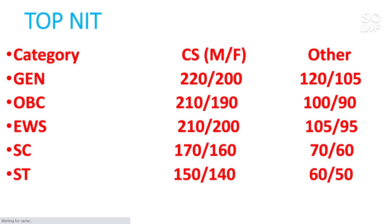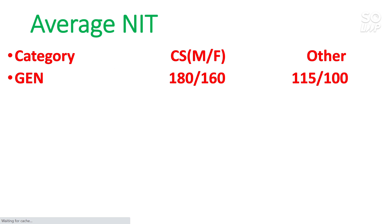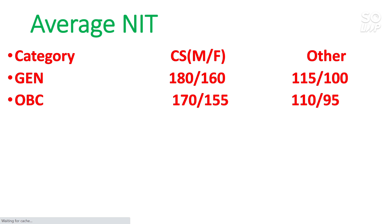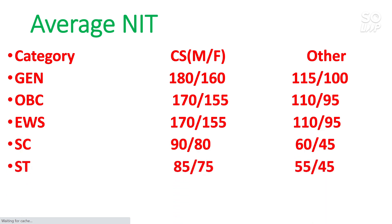Now for average NITs, General category needs 180 for male and 160 for female for CS branch, and 115 for male and 100 for female for other branches. For OBC, it is 170 for male, 155 for female for CS, and 110 for male, 95 for female for other branches. For EWS it is similar to OBC — 170 for male and 155 for female. For SC, 90 for male and 80 for female for CS, and 60 for male and 45 for female for other branches.